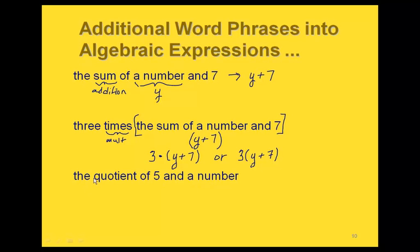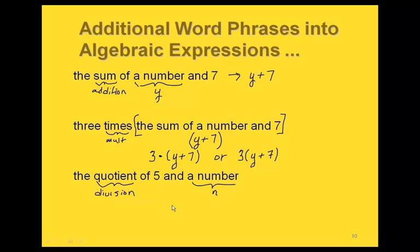'The quotient of 5 and a number' — quotient means division. Using n for the number. Quotient follows the same order as the phrase, so this translates to 5 divided by n.